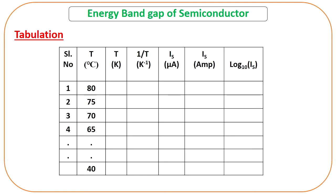The data table has temperature readings from 80 degrees Celsius to 40 degrees Celsius in steps of 5 degrees Celsius. First, convert temperature from degrees Celsius to Kelvin, then calculate 1/T. From the micro ammeter you get the current readings in microampere. Finally, convert the microampere current to ampere by multiplying by 10 to the power minus 6.